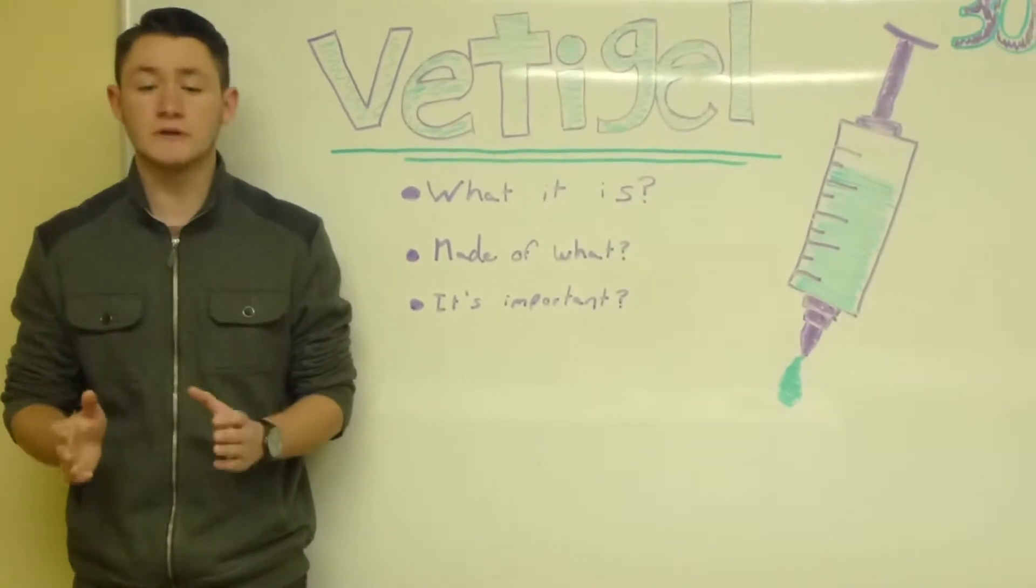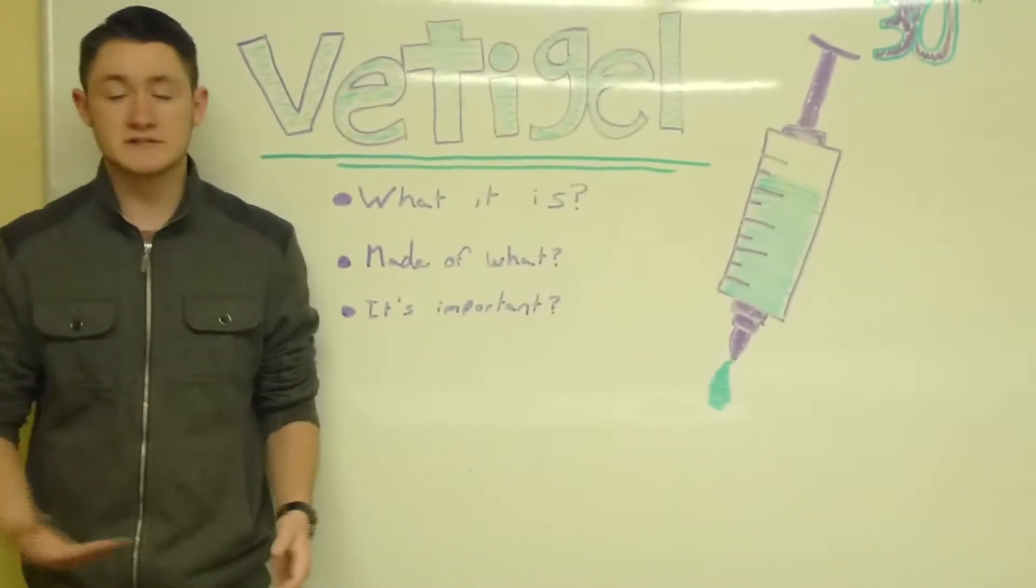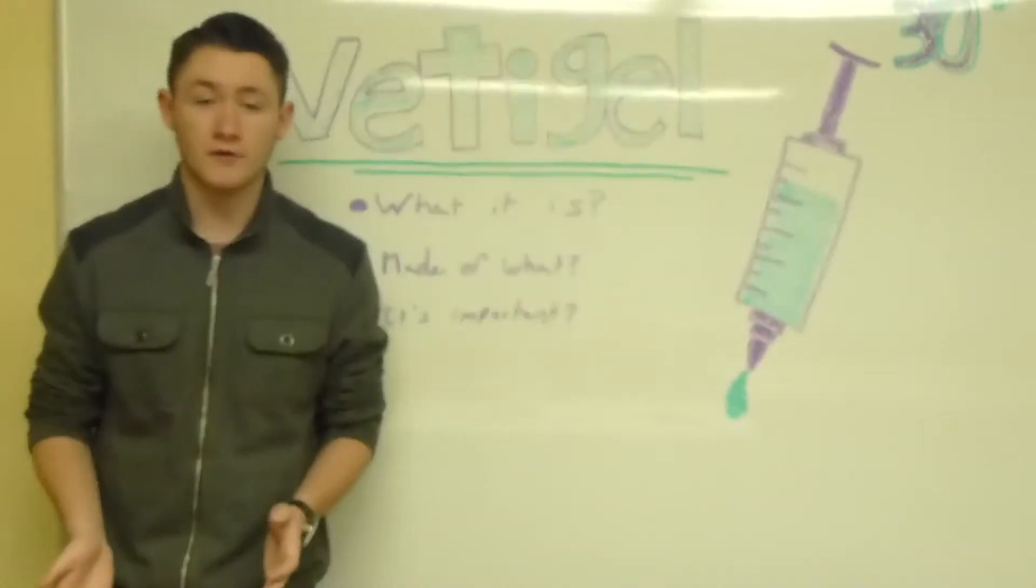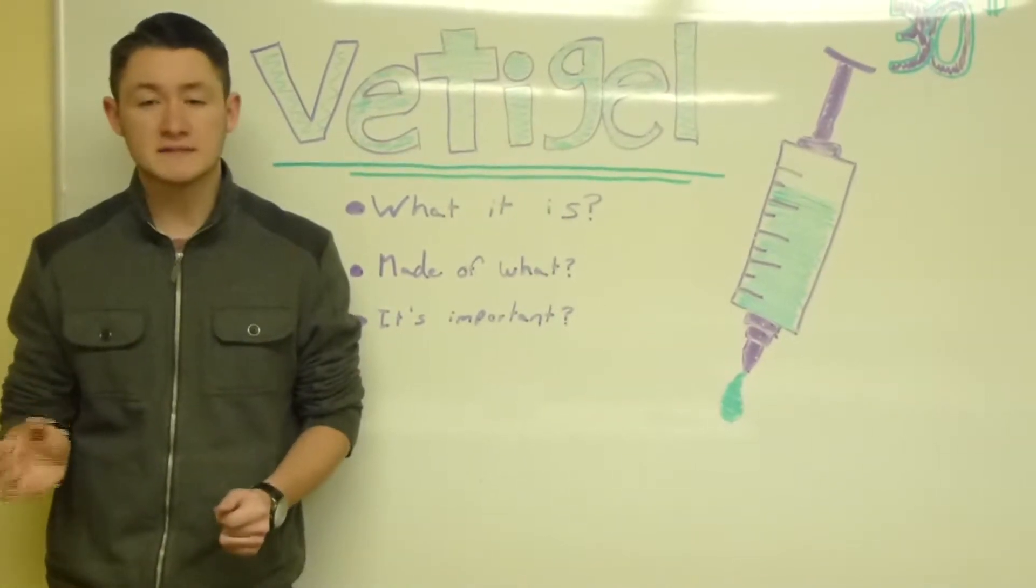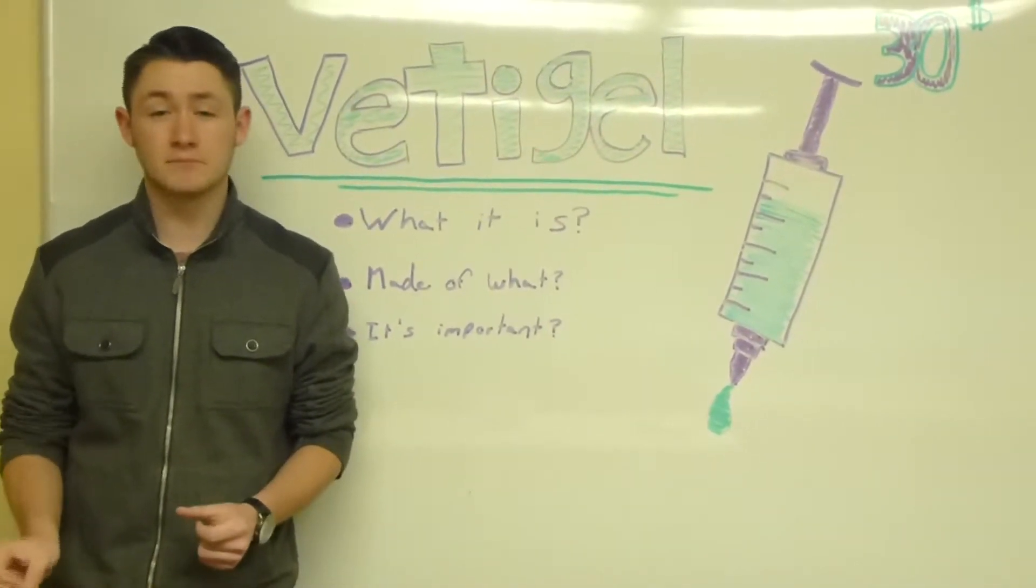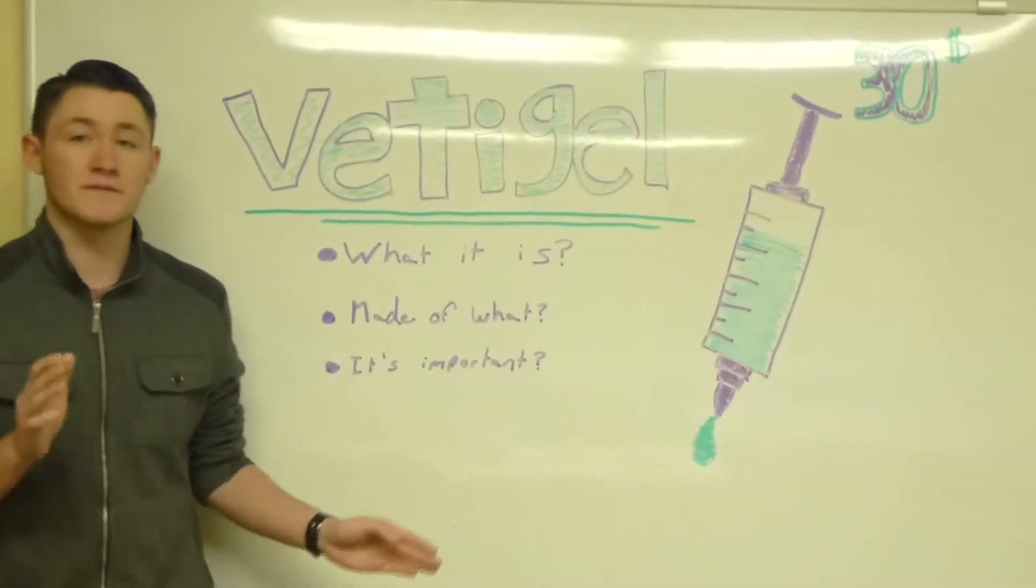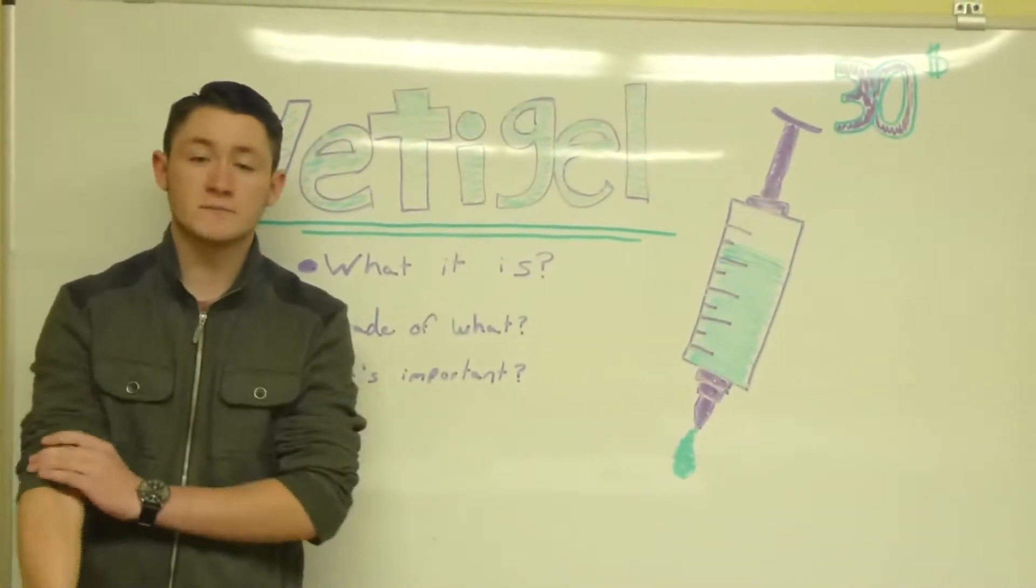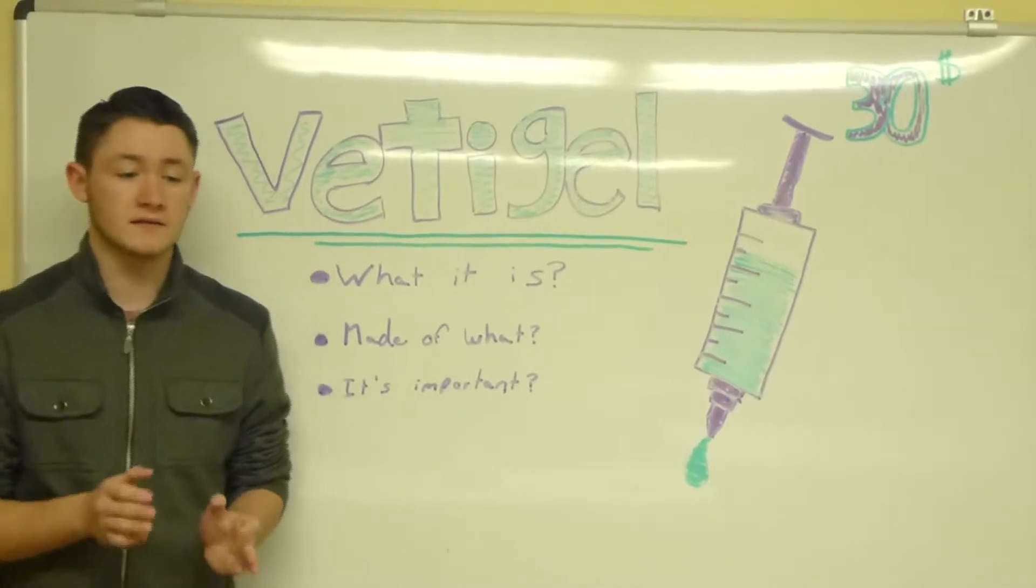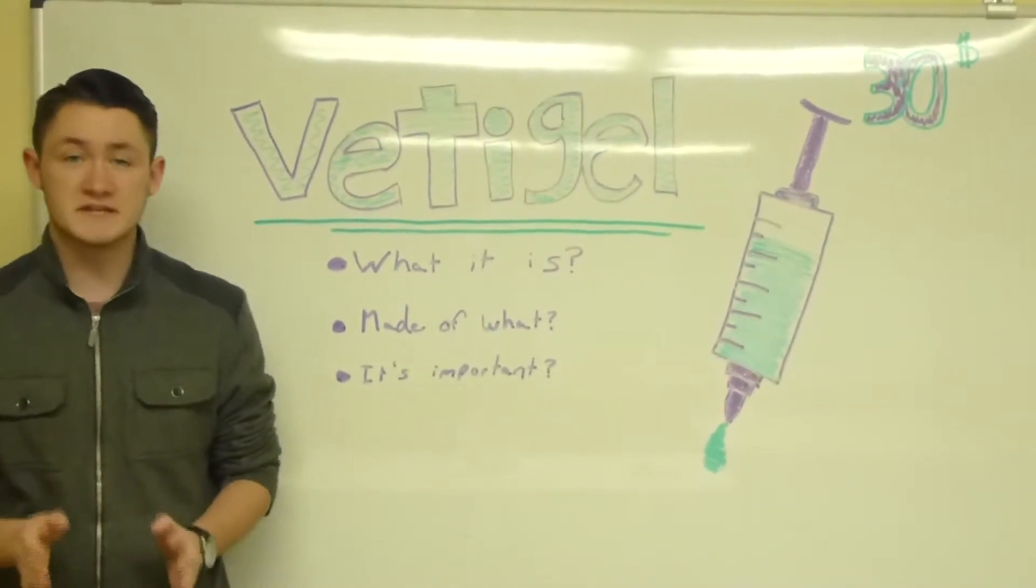And this is extremely unique in the sense that, say I was in the battlefield and I cut my femoral artery. I have exactly eight minutes to get that completely repaired and stop bleeding before I bleed out and die. Vettigel would allow me to do that in a mere 15 seconds, decreasing mortality rates and overall making the lives of every individual substantially better.